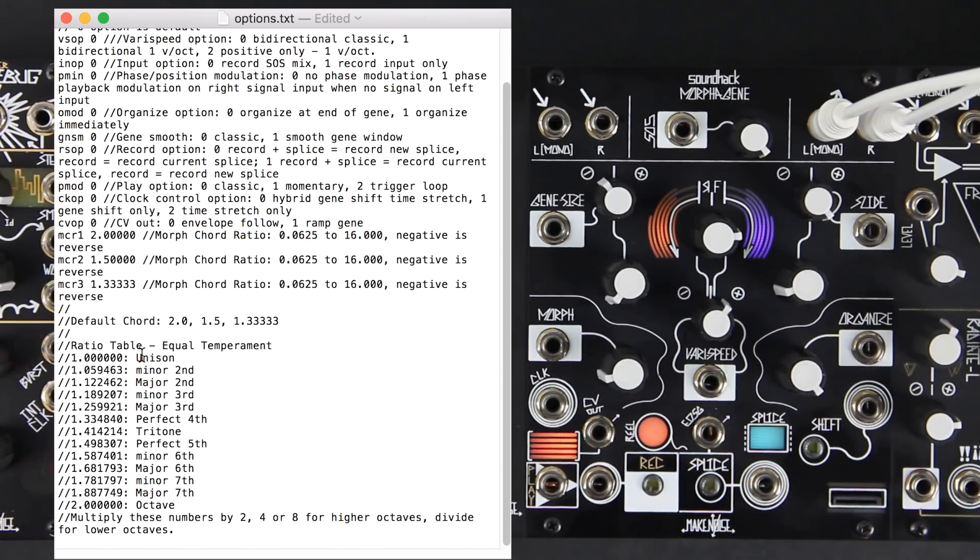MCR stands for Morph Chord Ratio. In other words, the numbers you set here will set the tuning of the chord created by the three genes when the Morph control is near its maximum value. If you're not familiar with tuning ratios, I'll link some resources in the video description. In short, we can think of these numbers as multiplying the frequency of the original gene as set by vary speed.